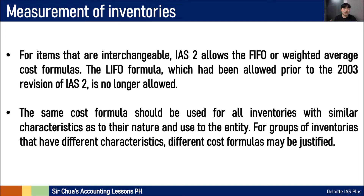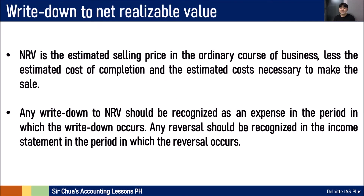The computational part — how to do the FIFO and weighted average — will be discussed when you reach intermediate accounting. Our inventory should be presented at the lower of cost and net realizable value. NRV is the estimated selling price in the ordinary course of business, less the estimated cost of completion and estimated cost necessary to make the sale. Any write-down to NRV should be recognized as an expense in the period in which you write it down. Any reversal should be recognized in the income statement in the period in which the reversal occurs.